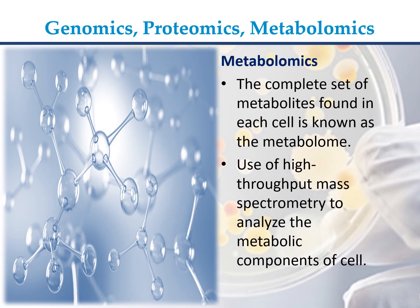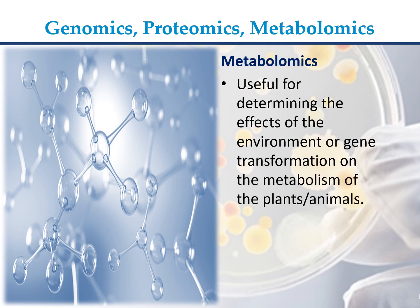Metabolomics: the complete set of metabolites found in each cell is known as the metabolome. Use of high-throughput mass spectrometry to analyze the metabolic components of a cell. Metabolomics is useful for determining the effects of the environment or gene transformation on the metabolism of plants and animals.